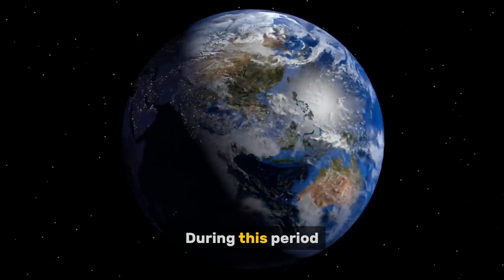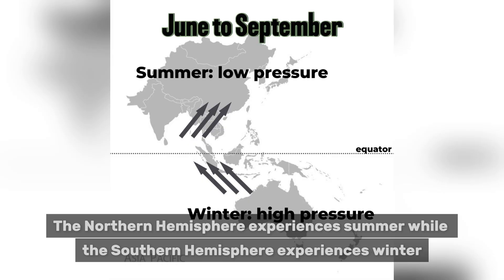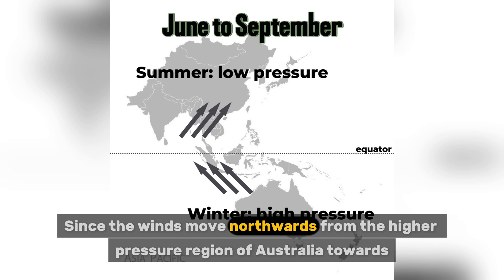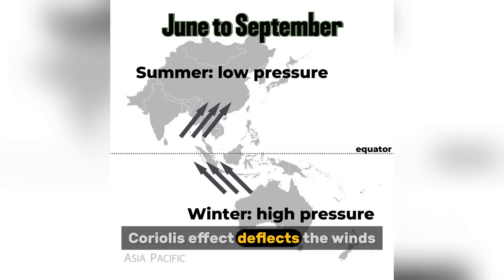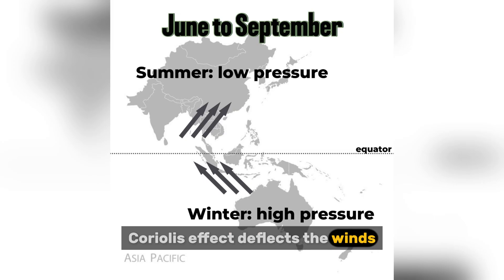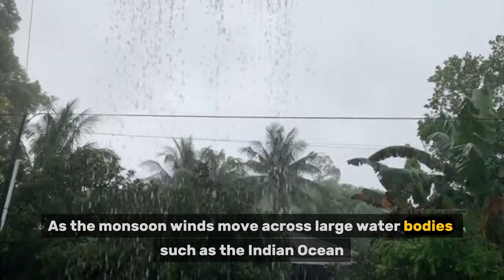Next, the reversal of winds occurs from June to September, when the southwest monsoon takes place. The northern hemisphere experiences summer while the southern hemisphere experiences winter. Since winds move northwards from the higher pressure region of Australia towards the lower pressure region of central Asia, the Coriolis effect deflects the winds, giving rise to the southwest monsoon.